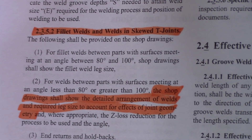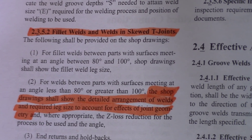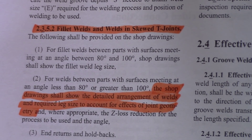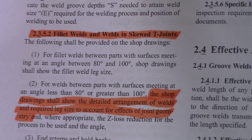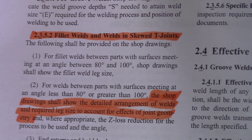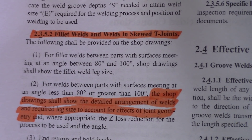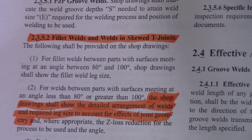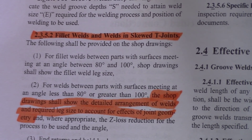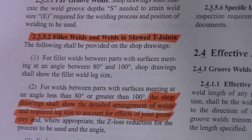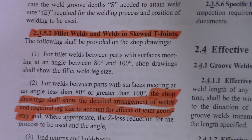This is the first section on skewed T-joints with fillet welds. It's in section 2.3.5.2 on page 6 of the Structural Steel D1.1 welding code. The main highlighted point is: the shop drawings shall show the detailed arrangement of welds and required leg size to account for the effects of joint geometry, including where appropriate the Z-loss reduction. Basically, to be a skewed T-joint, the angle has to be below 80 degrees or above 100 degrees. If you're between 80 and 100, that's not considered a skewed T-joint.